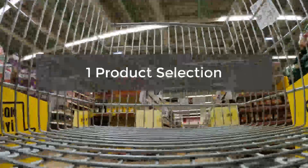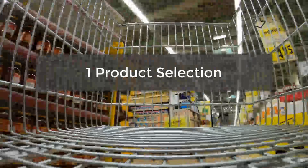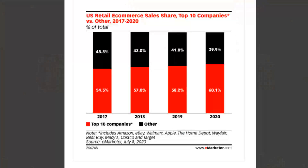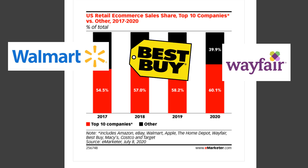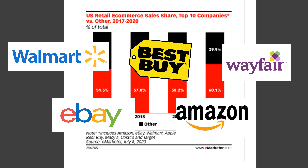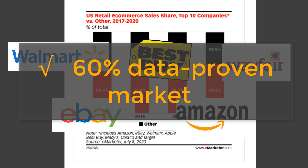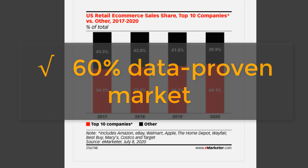Take product selection as an example. In 2020, according to eMarketer.com, the top 10 companies have taken up over 60% of US retail e-commerce sales. By getting data from these top sites, such as Walmart, Best Buy, Wayfair, eBay, and Amazon, you can get 60% of the market covered. Product data from these sites will shed light on what product you should sell.